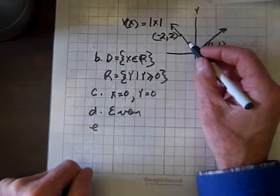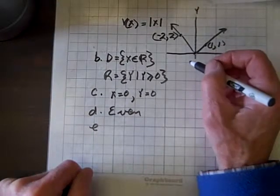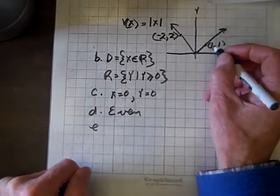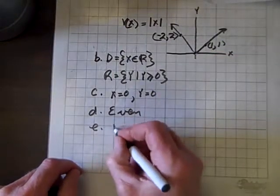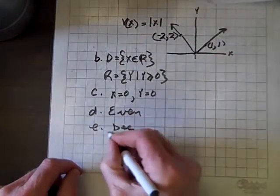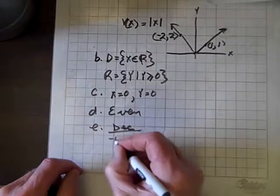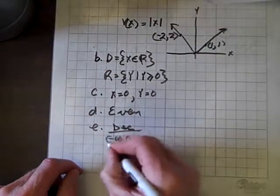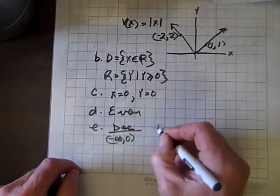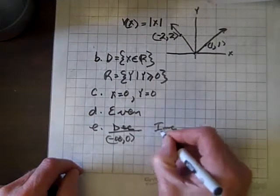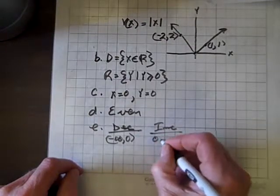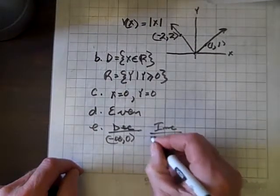This function is decreasing on an interval and increasing on an interval. So it's decreasing on the open interval (-∞, 0) and increasing on the open interval (0, ∞).